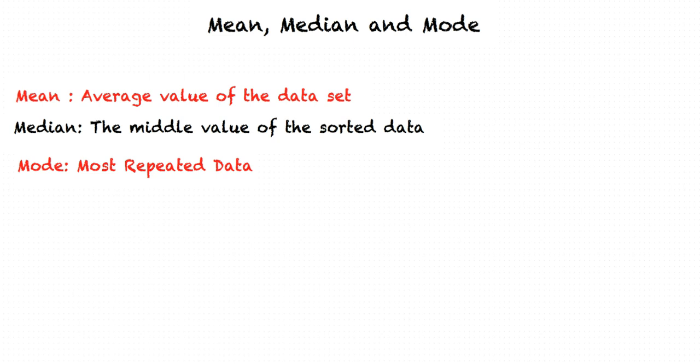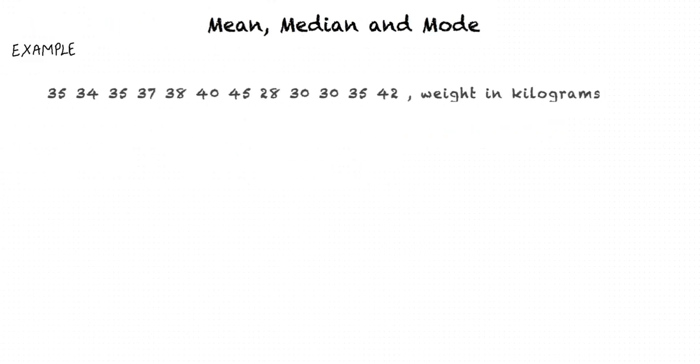Given a data set, how do we calculate these quantities? Let us consider an example. We have the weight of 12 boys in kilograms: 35, 34, 35, 37, 38, 40, 45, 28, 30, 30, 35, and 42. We are required to determine the mean, median, and mode for this data set.